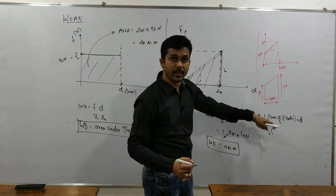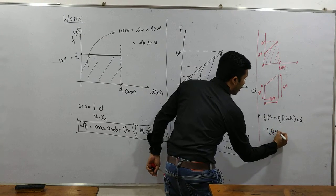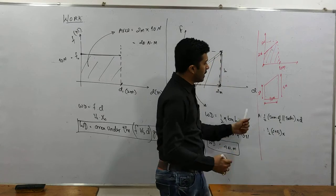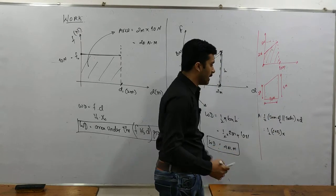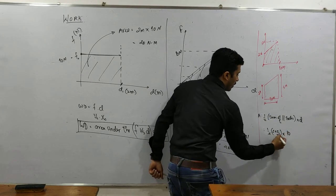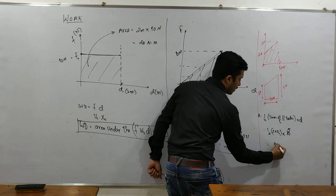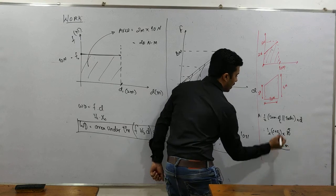2 plus 5 that is 7 into what is the distance between the parallel sides? 10 meter. It cancels out by 5, 7 times 5 is 35 Newton meter is the answer.